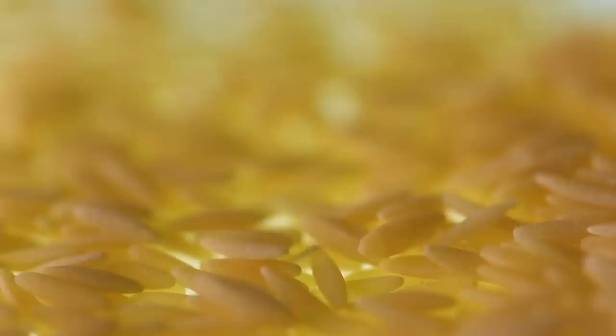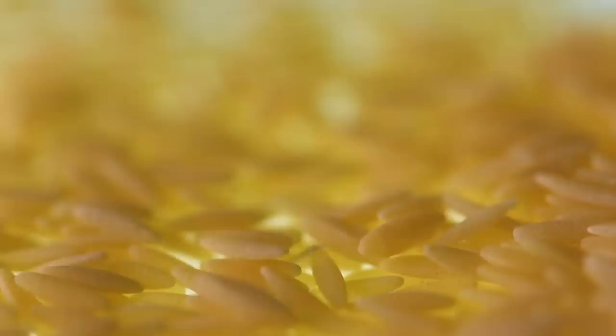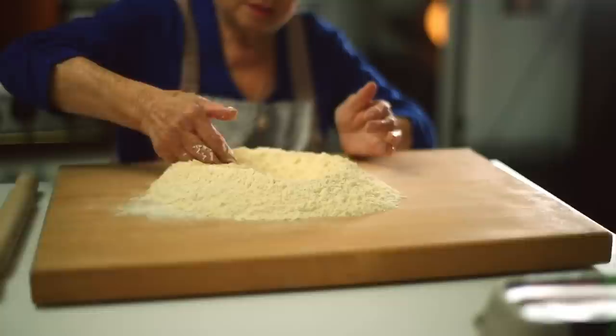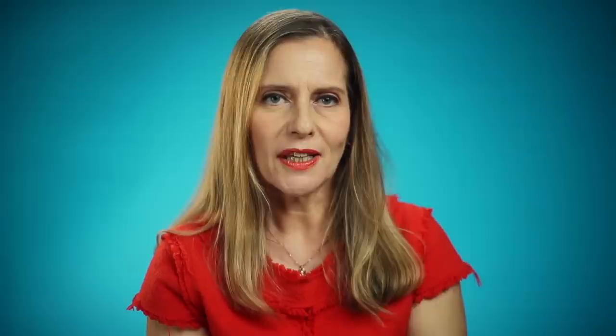In the amazing taxonomy of the pasta species, there are many different ways to divide it, but one of the basic divisions is between fresh pasta and dry pasta. Dry pasta is always durum wheat flour and water. Fresh pasta could be either that or it could be flour and eggs.